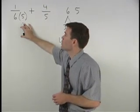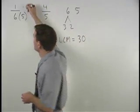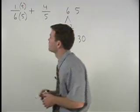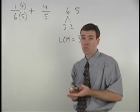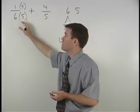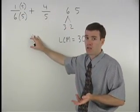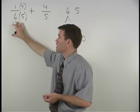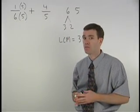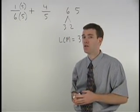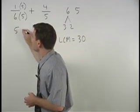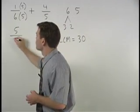However, if we also multiply the numerator of the fraction by five, we're actually multiplying the fraction by five over five, which is one. And when we multiply anything by one, it doesn't change its value. So our first fraction becomes five over 30.